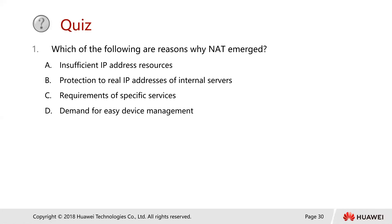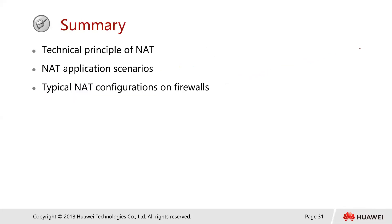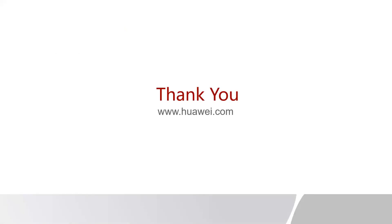Which of the following are reasons why NAT emerged? The answer is A and B: because there are insufficient IPv4 addresses, and because NAT helps protect the real IP addresses of internal users. That brings us to the end of this chapter. We have looked at the technical principle of NAT, application scenarios, and typical NAT configurations on firewalls. Thank you.